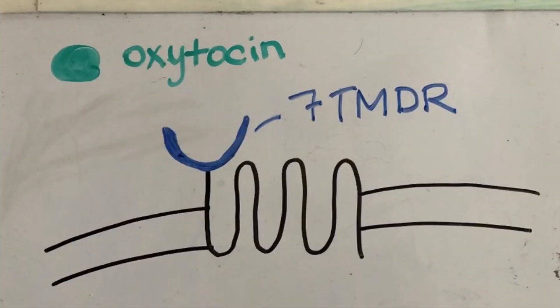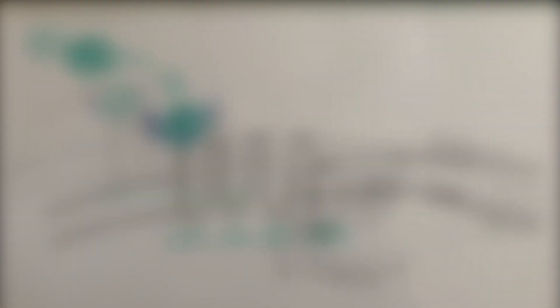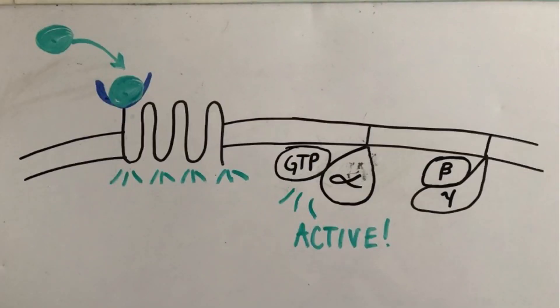Oxytocin is a product of the hypothalamus. It will bind to its seven transmembrane domain receptor. This binding activates the G protein, which causes a conformational change in the G protein. This conformational change causes the G protein to switch GDP, its inactive state, for GTP, its active state.